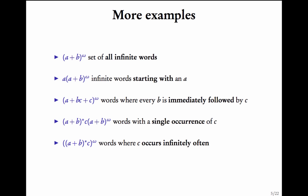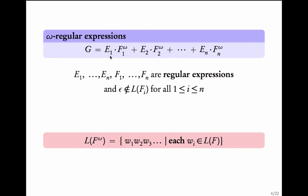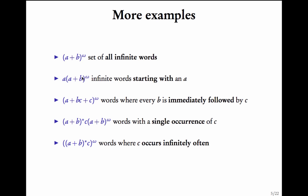Here are some more examples. (a + b)^ω is the set of all infinite words. a·(a + b)^ω — when the dot is clear, we will just remove it. Here, a is a regular expression and (a + b) is a regular expression, so a·(a + b)^ω is an omega regular expression, and this is the set of all infinite words starting with an a.